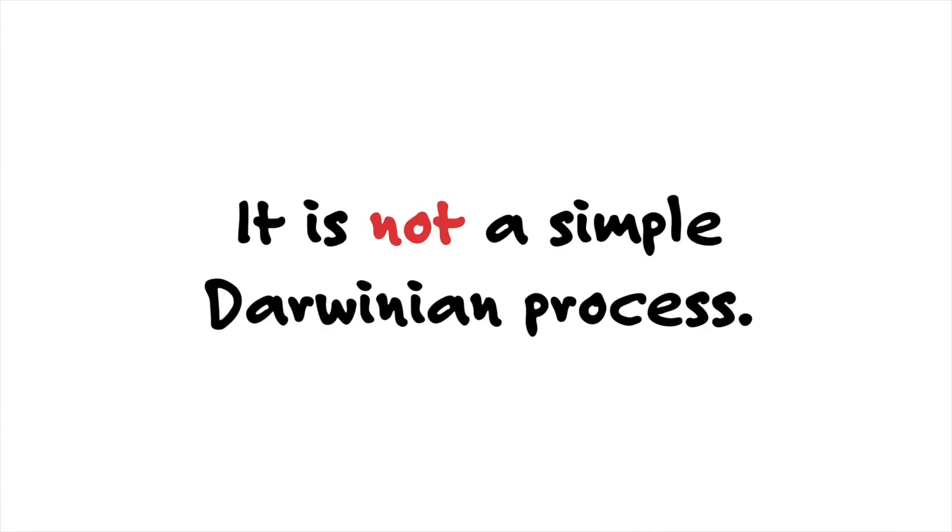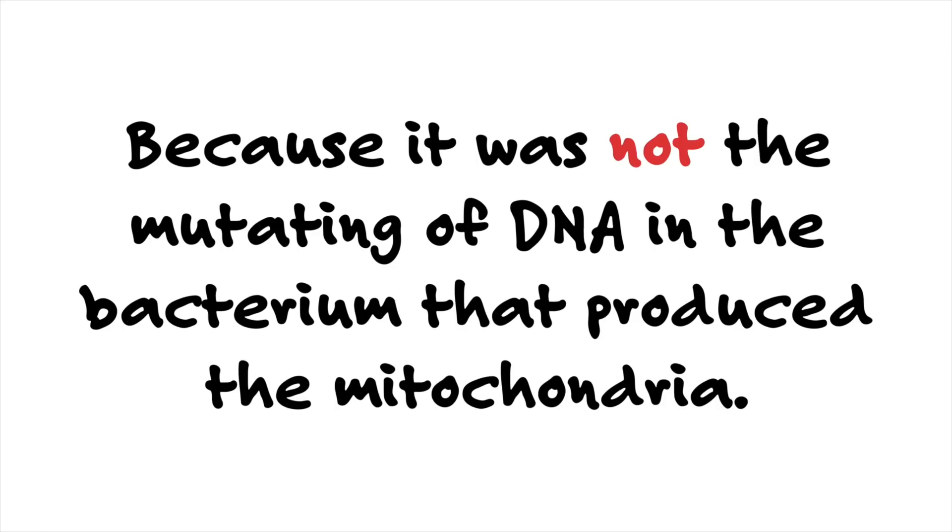But here's the thing to realize. Even if that endosymbiotic theory is correct as far as the mitochondria goes, it is not a simple Darwinian process because it was not a mutating of DNA in the bacterium that produced the mitochondria. Even if this is true, and I'm not granting that it is, but if it were true, this is a vast radical departure from the standard Darwinian model. It's something that happened that was not a change to DNA. It was not a mutation to DNA. It was some other event where one cell swallowed another and that smaller cell took up residence within it. That's not a mutation. That's not standard Darwinian evolution.